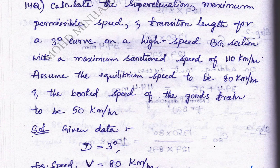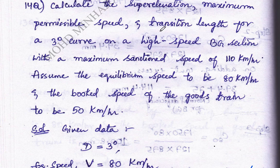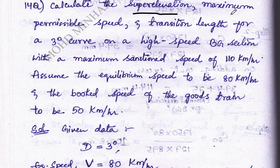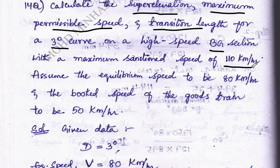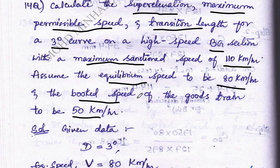In today's problem of railway engineering, we will solve different types of problems related to railway engineering. We have to calculate super elevation, maximum permissible speed, and length of transition curve for a BG section. A three-degree curve is given, with three different speeds: maximum sanctioned speed 110 km/h, equilibrium speed 80 km/h, and booked speed 50 km/h.